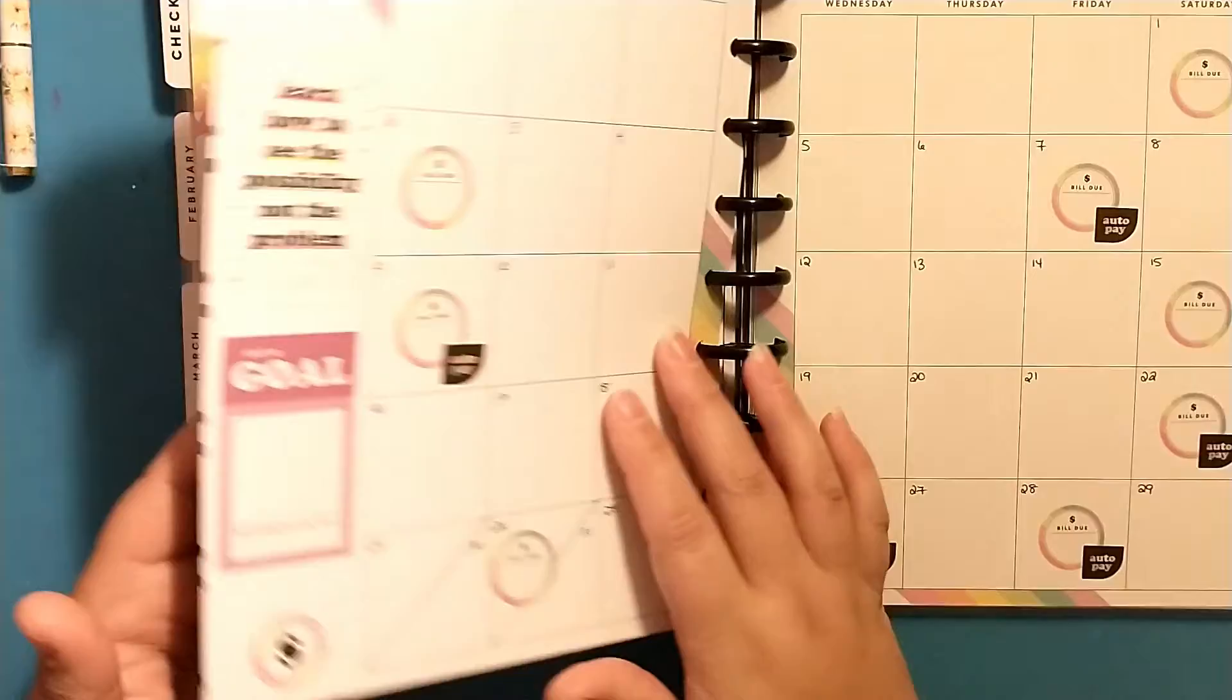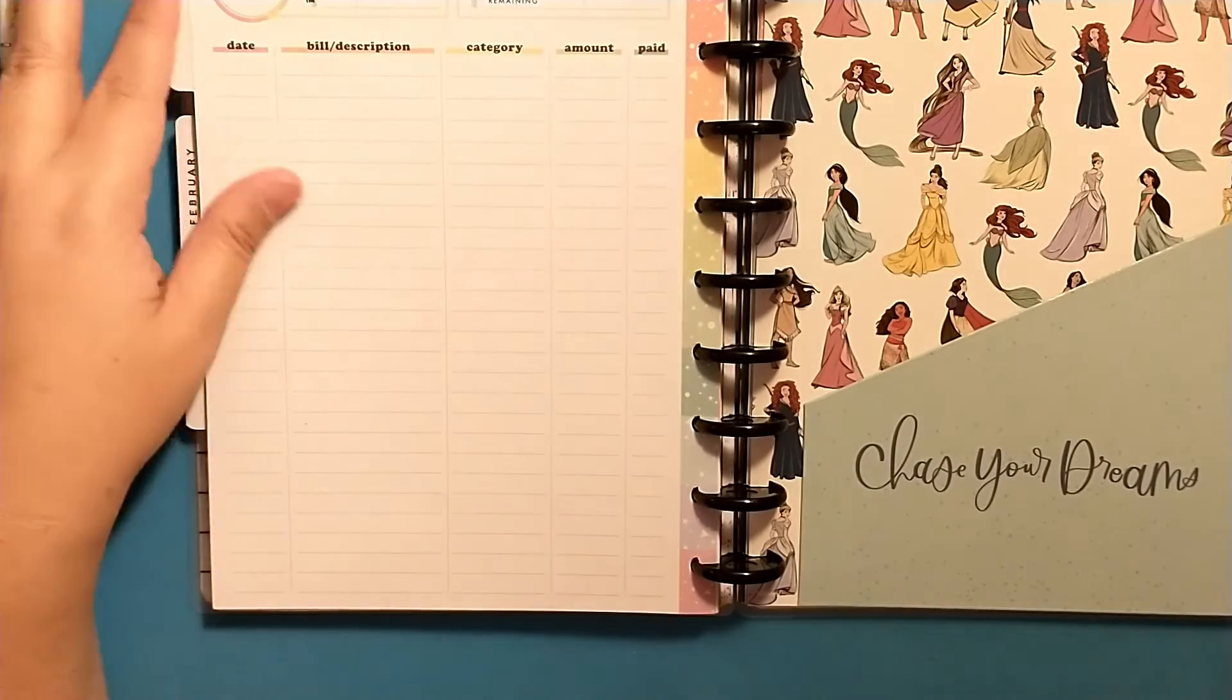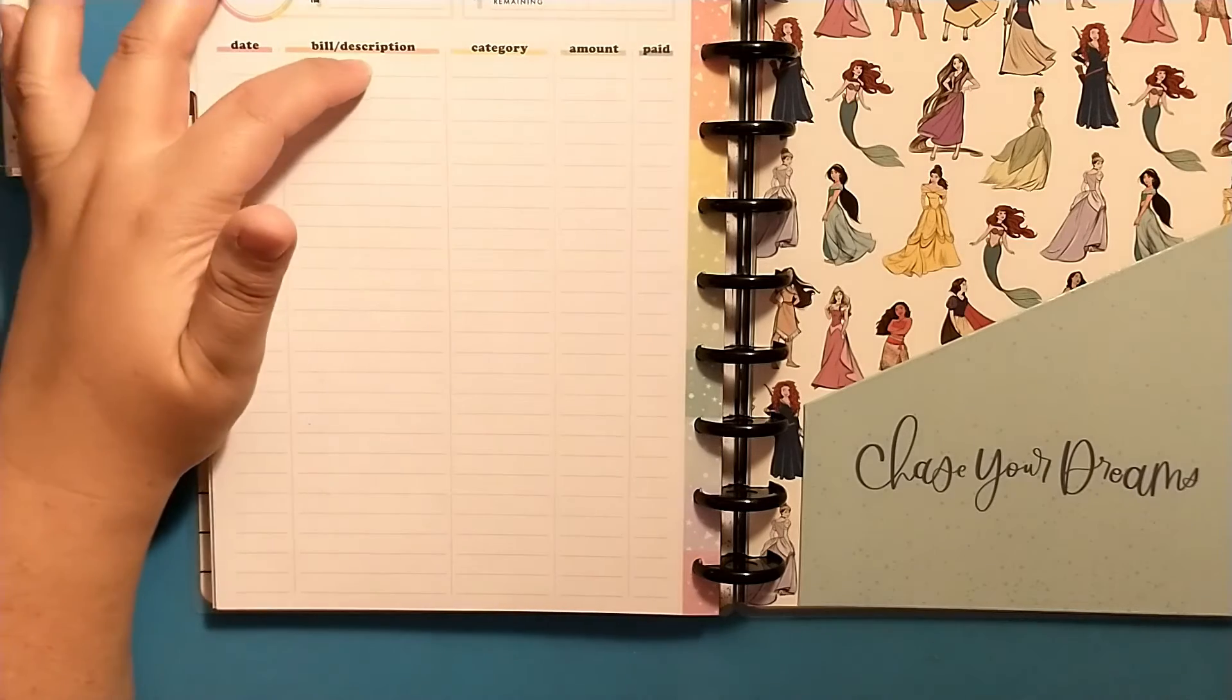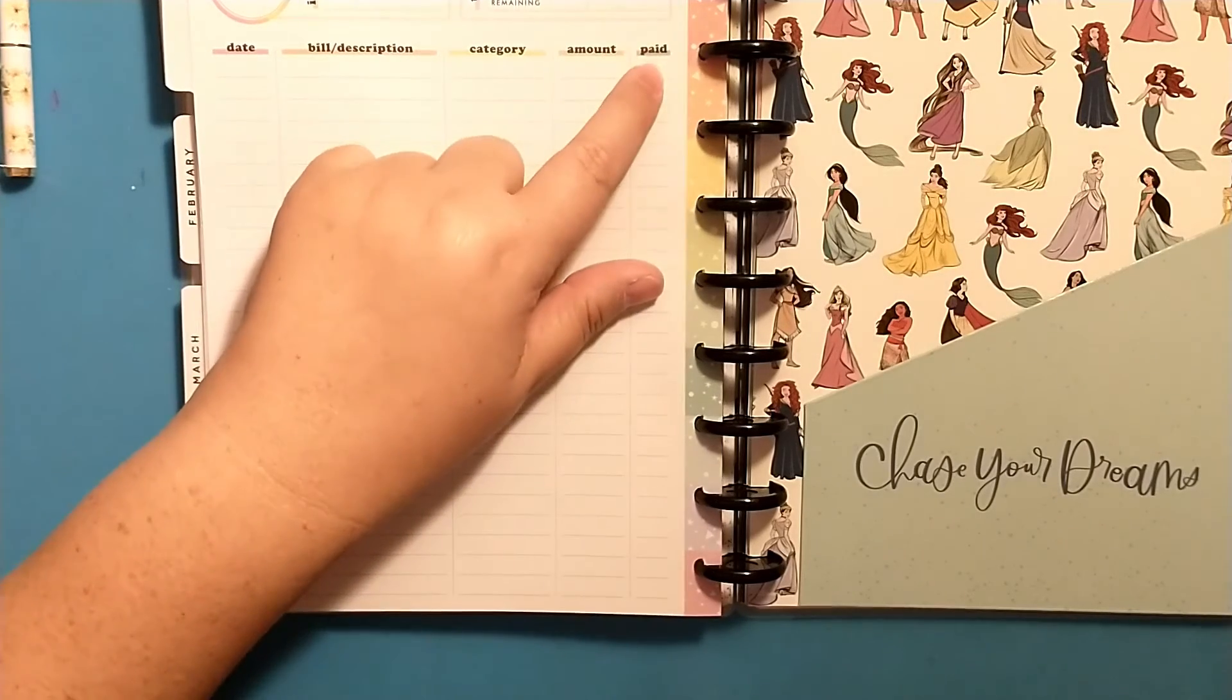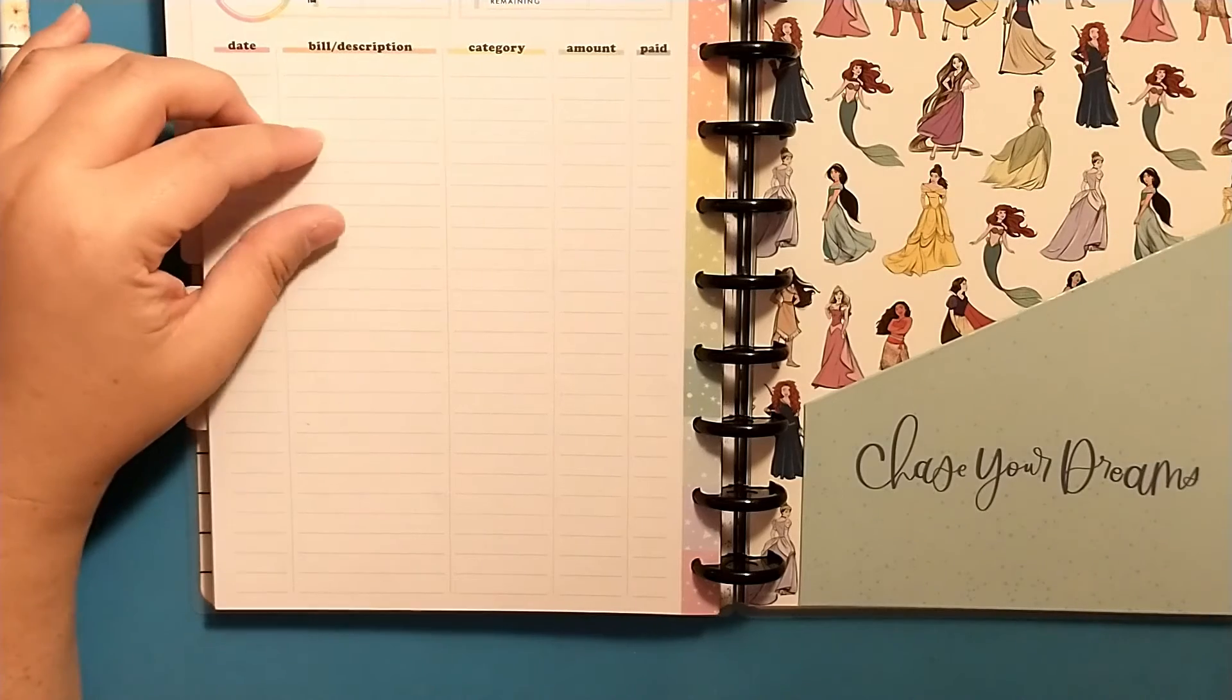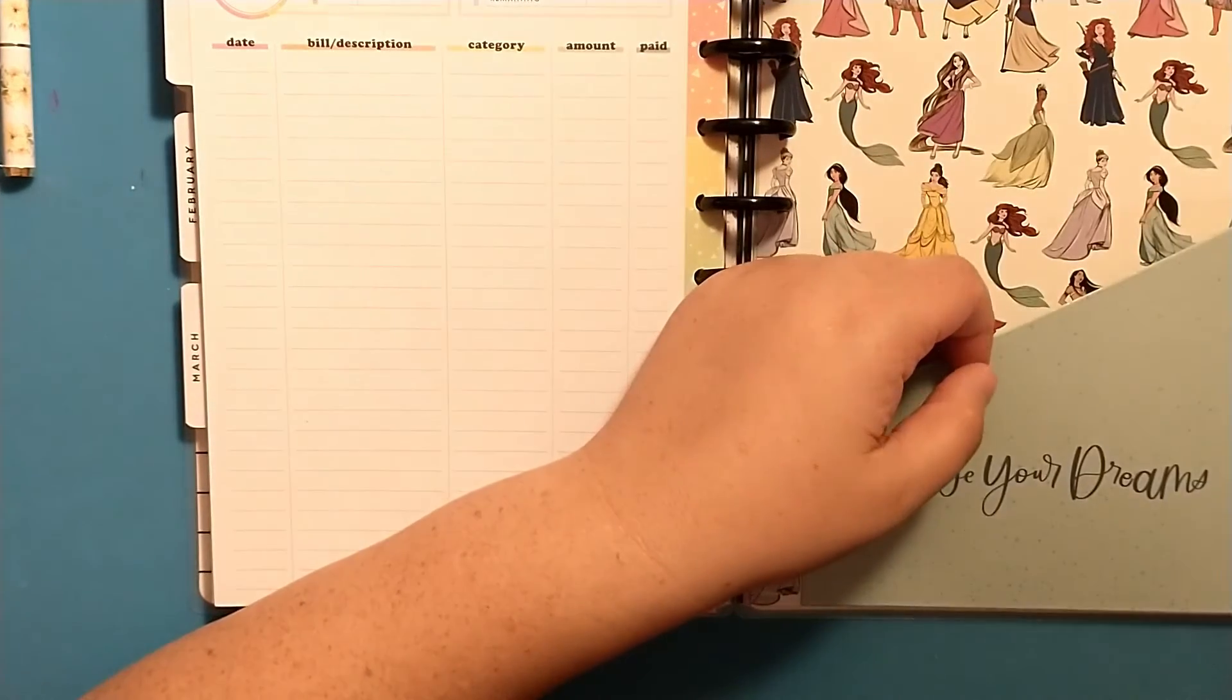And that is how I set up my monthly in my budget planner. And then for these pages here, I just write down the date, like I went to Walmart today, so I'd put today's date. Bill or description I'd put Walmart, and category would be groceries and the amount, and of course it was paid. Or on like I paid several of my bills last month but they were for this month's bills, so I will probably document that.